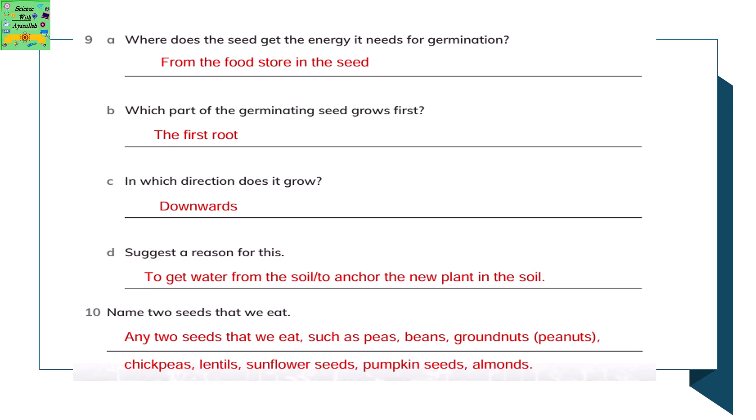Suggest a reason for this. To get water from the soil, it needs to grow downwards and absorb the water from it. Name two seeds that we eat. The seeds could be peas, beans, groundnuts, chickpeas, lentils, sunflower seeds, or pumpkin seeds or almonds.